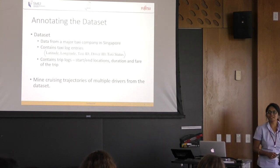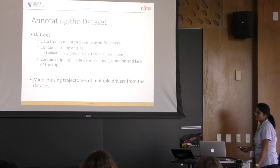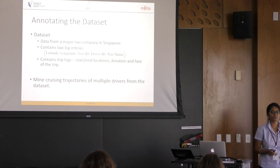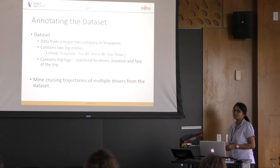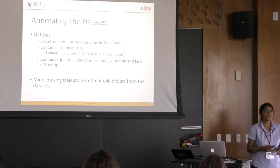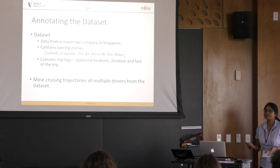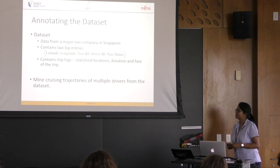From the dataset, we mine the cruising trajectory of multiple drivers. A cruising trajectory starts when the taxi transitions from a non-free state into a free state, and it ends when the taxi state goes back to a non-free state. A cruising trajectory may end with or without getting a trip — for example, when a driver is looking for a passenger and suddenly decides to take a break, there won't be any trip associated with the cruising trajectory.